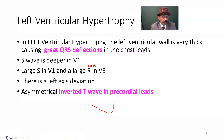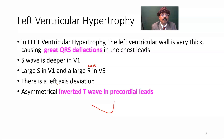We will go to the ECG again in detail. Left ventricular hypertrophy is diagnosed by ECG, by echocardiography, by MRI, and routinely by chest X-ray. So chest X-ray, ECG, echocardiography, and MRI can diagnose left ventricular hypertrophy.